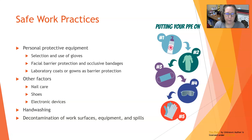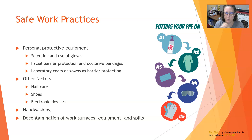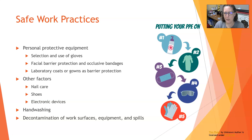Now let's talk about some safe work practices. For personal protective equipment, make sure you select the proper size gloves for your hands and use them. Also use facial barrier protection and occlusive bandages on any sores or open wounds to keep skin unexposed. Wear lab coats or gowns as barrier protection when working in the lab around specimens. The rule of thumb for putting on PPE: first use hand sanitizer to decontaminate your hands, then put your lab coat or gown on, then put on your face mask, then put on goggles.